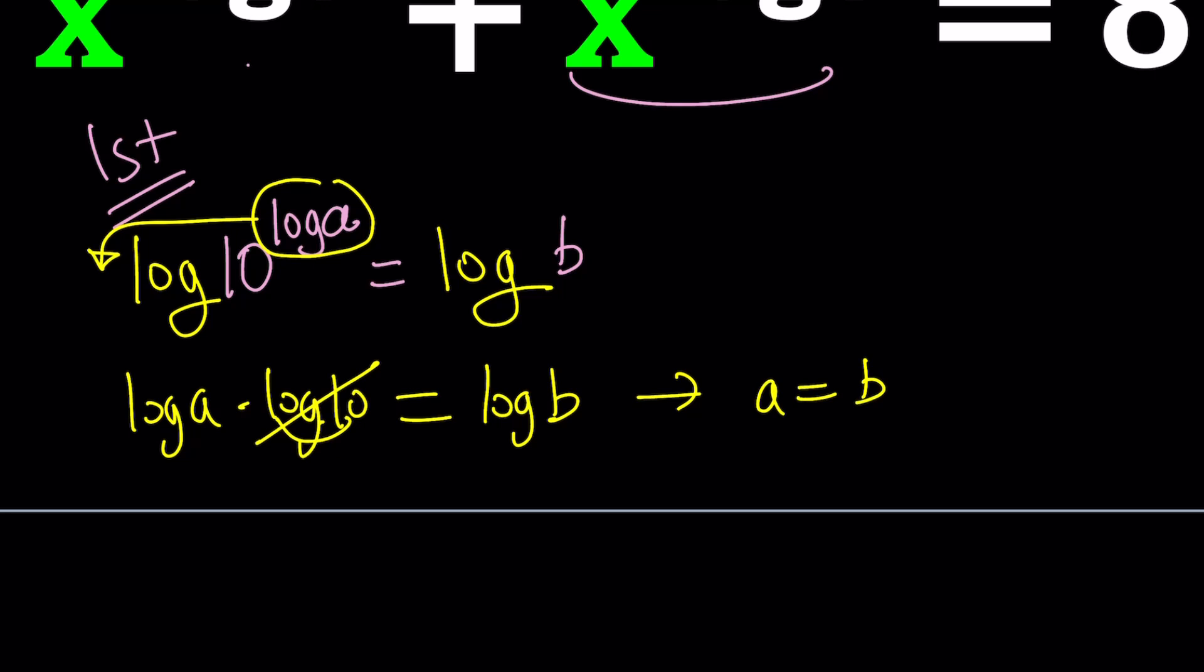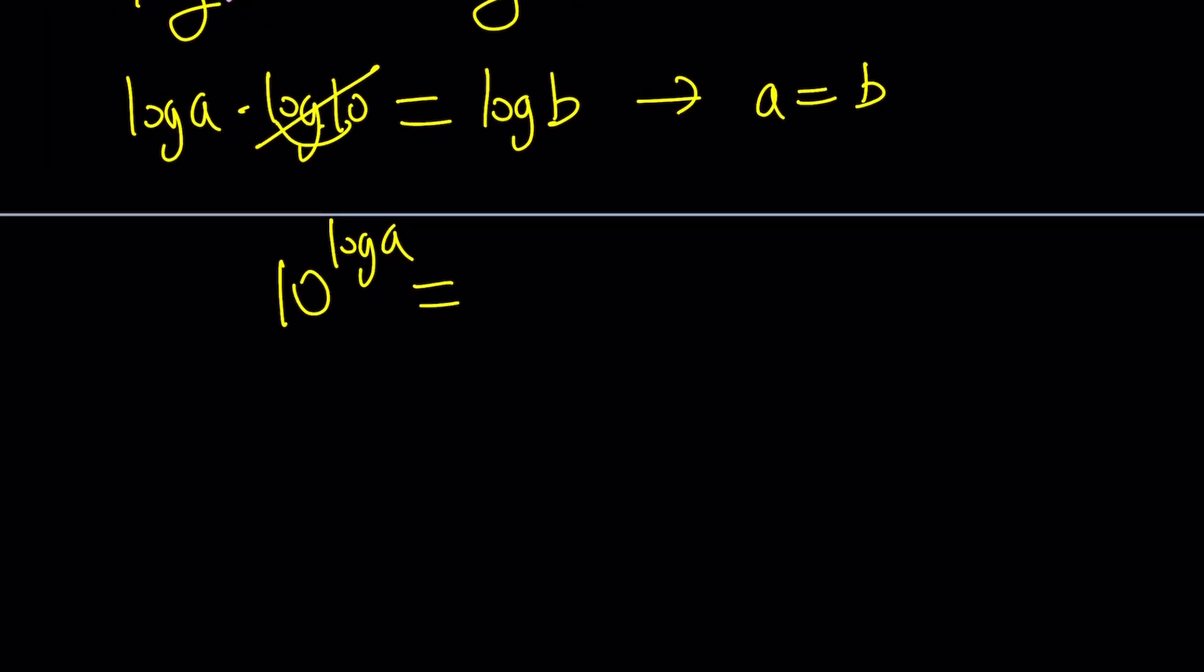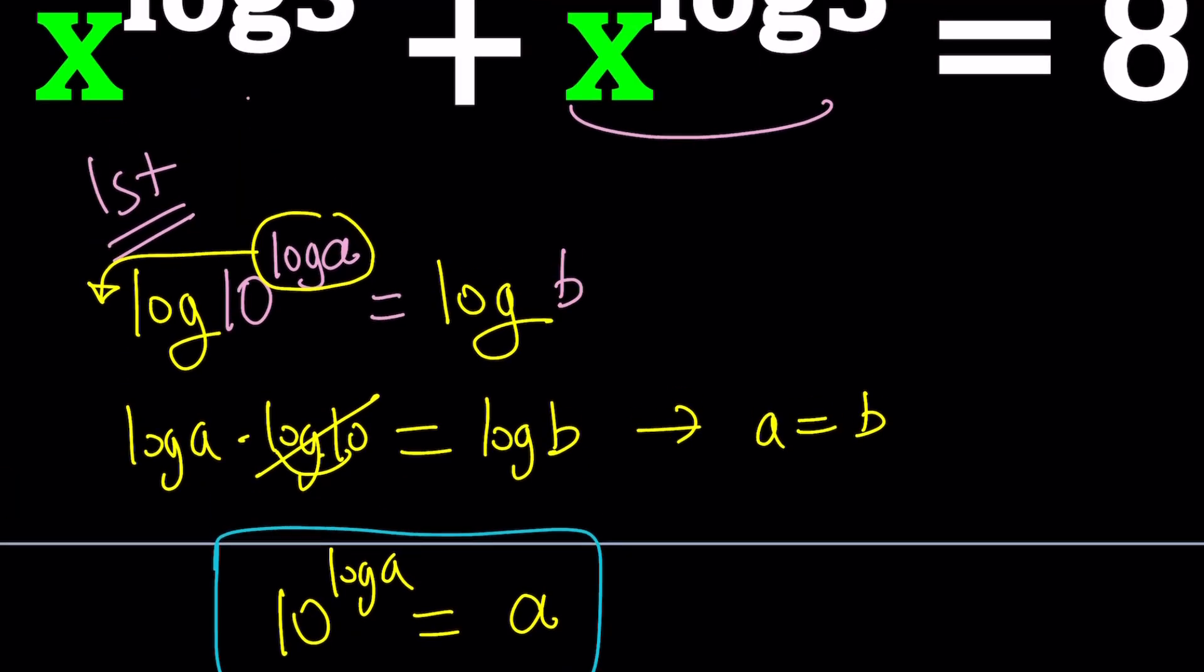It just means that instead of saying 10 to the power log a equals b, I can just replace b with a. Isn't that awesome? So this gives us a really nice identity. Let's hold on to that because we're going to use it in a little bit. I just wanted to give you a quick proof because this comes up a lot.